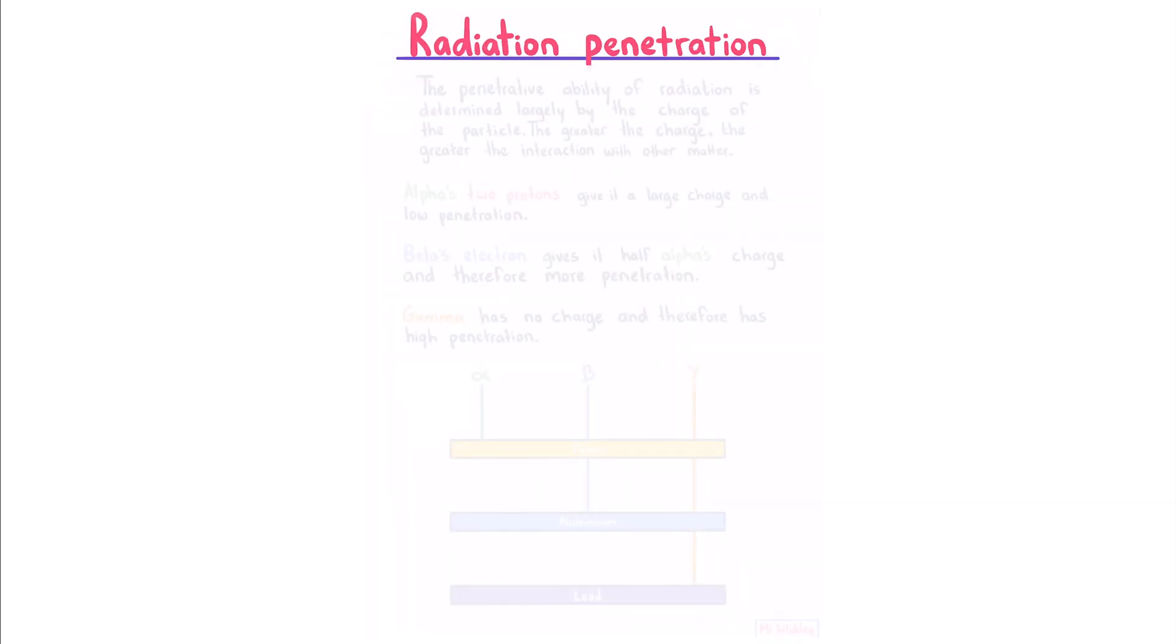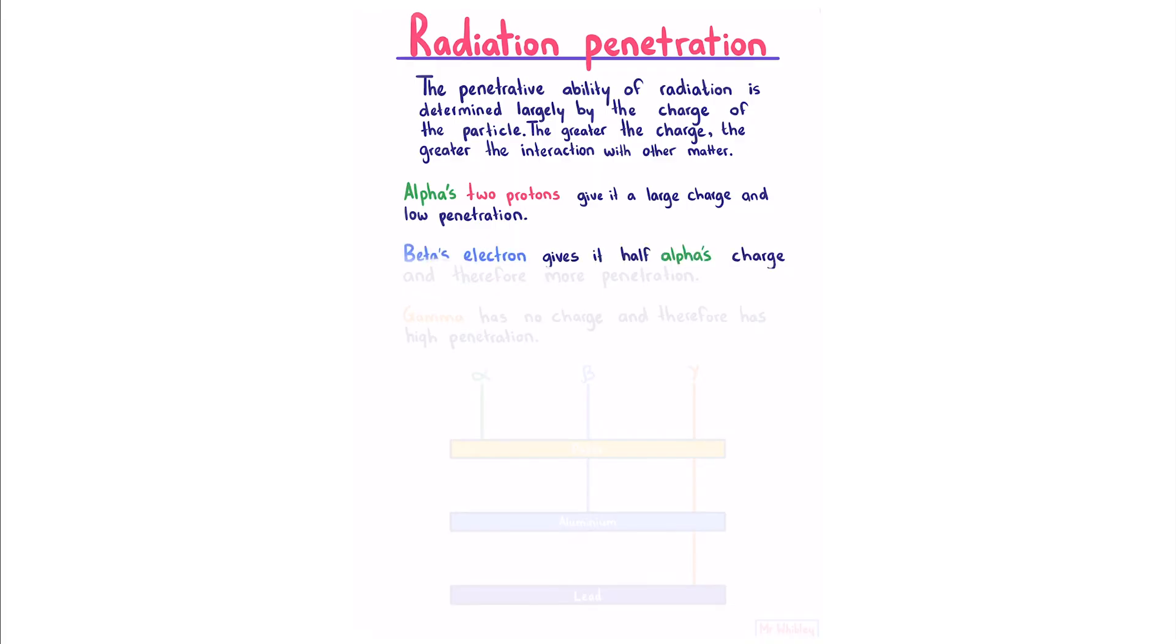Radiation penetration: The penetrative ability of radiation is determined largely by the charge of the particle. The greater the charge, the greater the interaction with other matter. Alpha's two protons give it a large charge and low penetration. Beta's electron give it half alpha's charge and therefore more penetration. Gamma has no charge and therefore has high penetration.